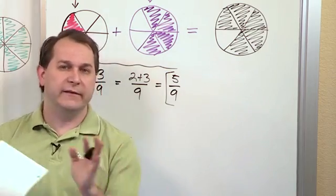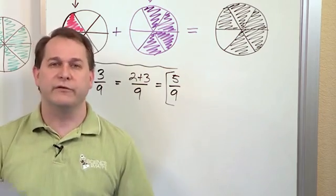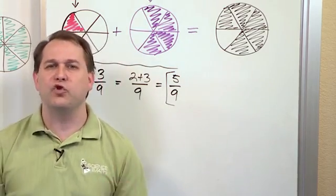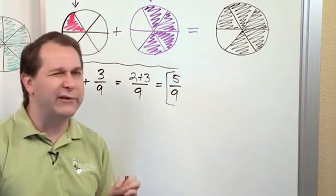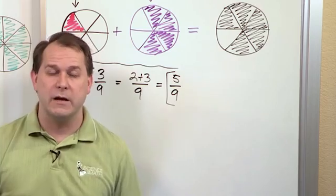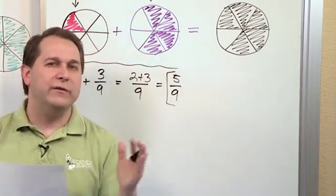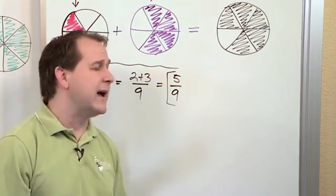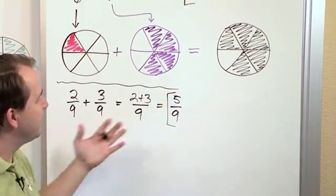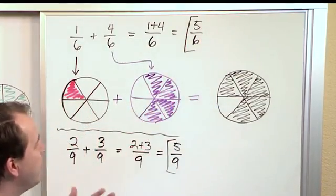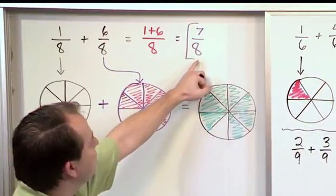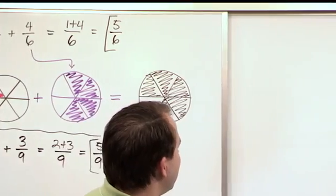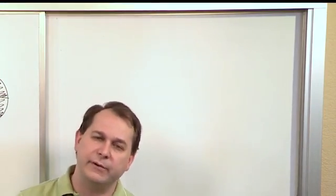We've already covered how to simplify fractions in detail. Basically, you look at the top and the bottom and figure out if there's a number you can divide into both evenly to reduce the fraction. If you're fuzzy on how to do that, go back to the previous lessons on simplifying fractions. Here, five-ninths is already simplified. For the earlier problem, five-sixths is already simplified, and seven-eighths can't be simplified further either. So far all of these problems have had answers that are already in simplest form.